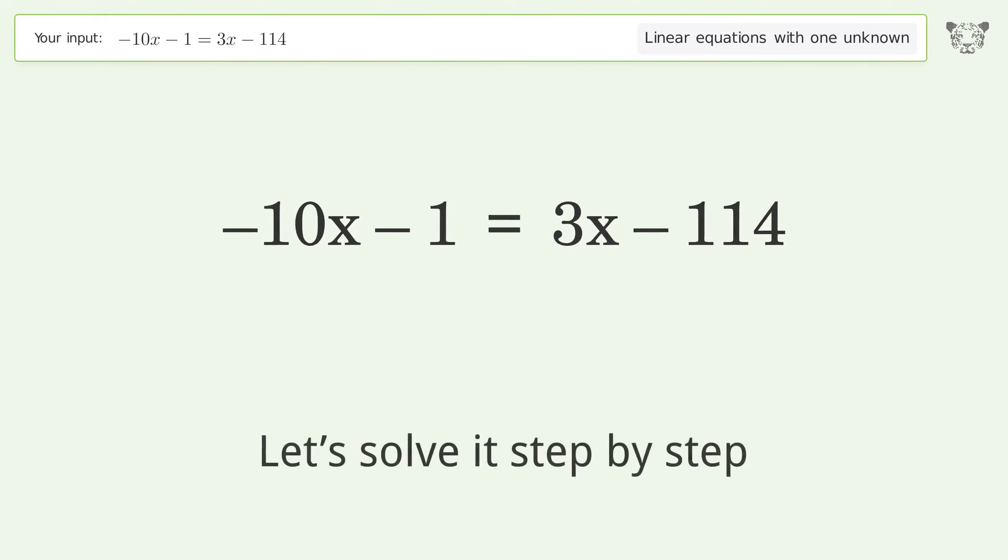You asked Tiger to solve. This deals with linear equations with one unknown. The final result is x equals 113 over 13. Let's solve it step by step.